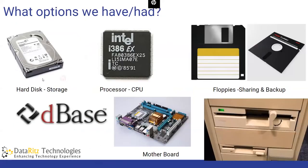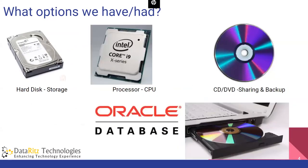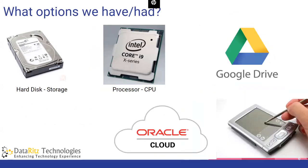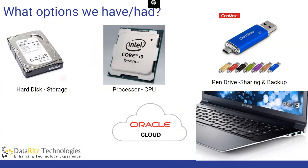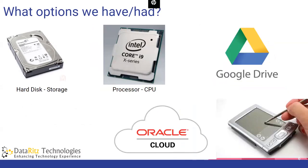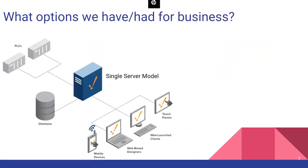This is how the world changed. Some of us started our careers from floppies, then DVDs, then pen drives. Today, a 16 GB pen drive costs around 300 rupees, but Google Drive gives 15 GB free of cost. The main purpose is data storage, sharing, and access from anywhere.